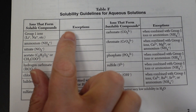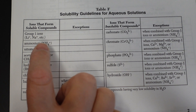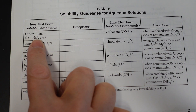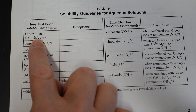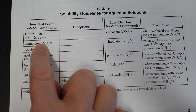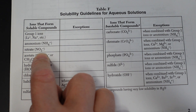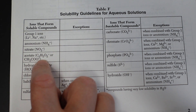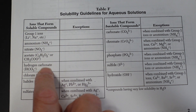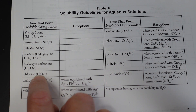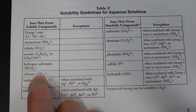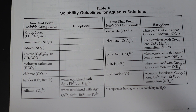Sometimes there are no exceptions — which means you will never find sodium, lithium, potassium, or any other group one ion as part of a precipitate. You will never find ammonium in a precipitate. You will never find nitrate in a precipitate. You will never find acetate, hydrogen carbonate, or chlorate as part of a precipitate. They are soluble with no exceptions.